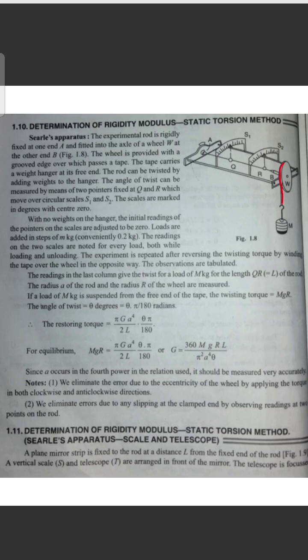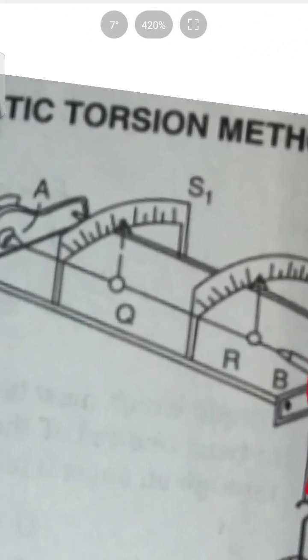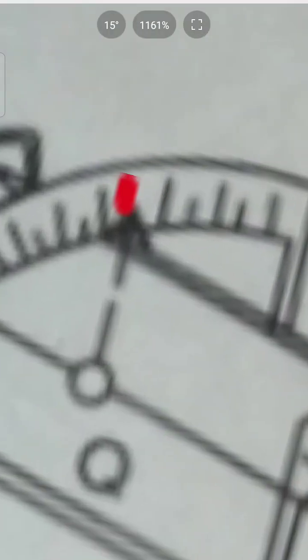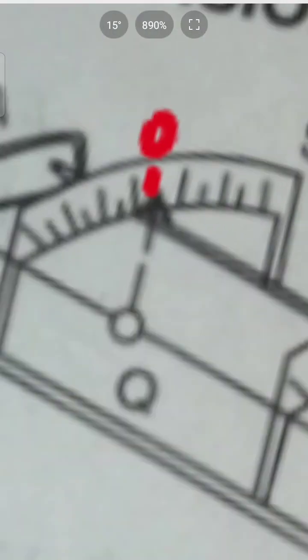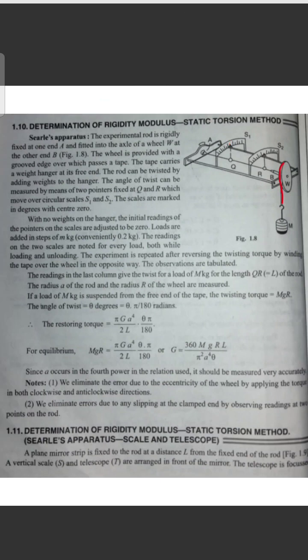Scales are marked in degrees with center zero. Inside, all the angles are marked in degrees, and at the center point you see zero. With no weights on the hanger, the initial readings of the pointers on the scales are adjusted to be zero.